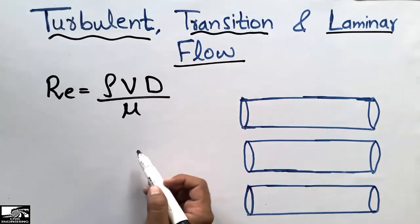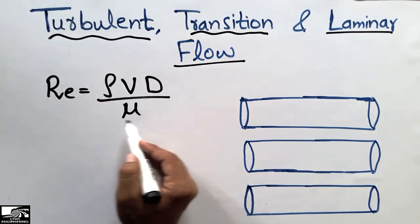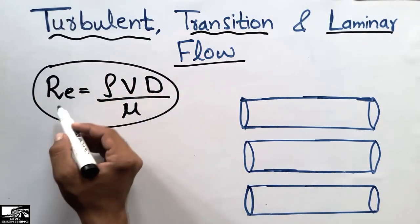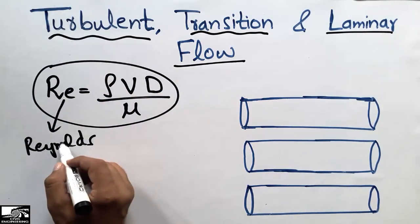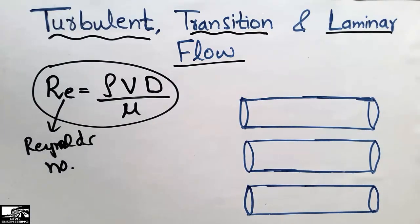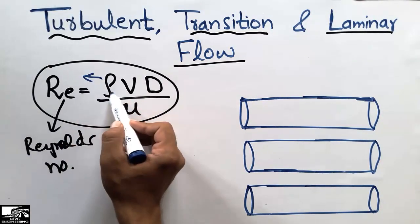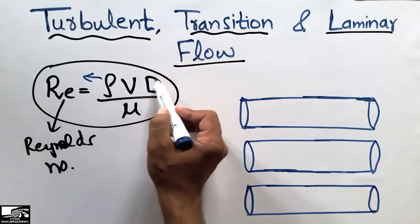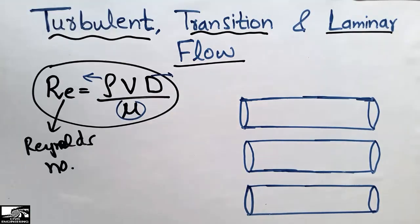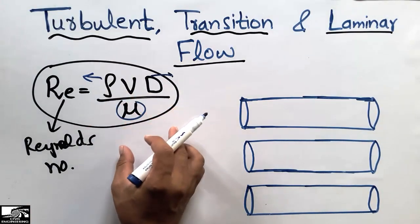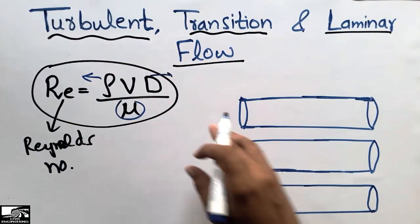These three flows — turbulent, transition, and laminar — are categorized by the Reynolds number. The Reynolds number is represented by Re, and its formula is: Re equals fluid density (rho) times velocity (v) times diameter of the pipe (d), divided by fluid viscosity (mu). The Reynolds number is used to categorize these three different types of flow.